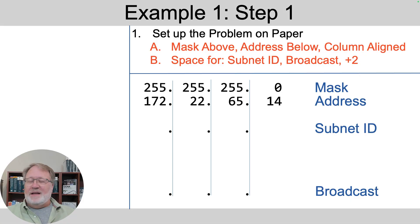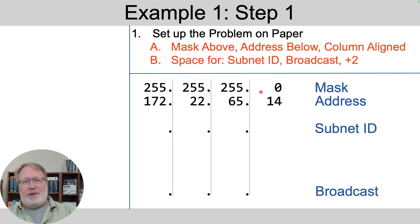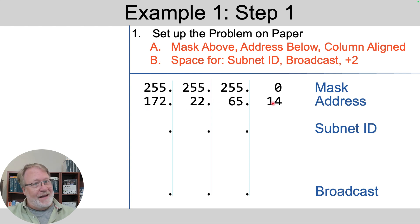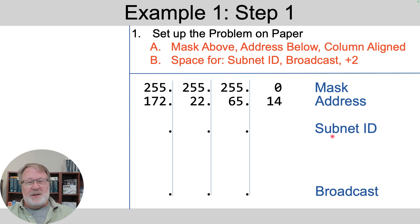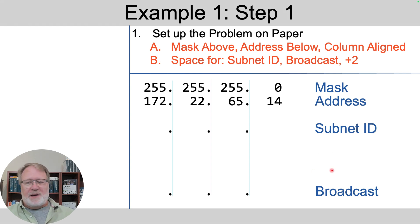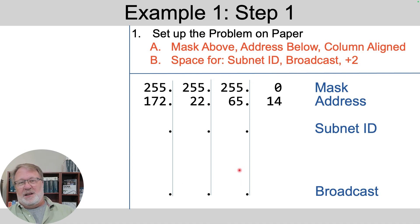Let's start with example one. We've got this IP address and this mask. Step one is all about setting up the problem — organizing it in a way that's easy to follow the process. We write the dotted decimal mask first and the IP address second, with column alignment because we're going to work octet by octet. We also leave space to write four dotted decimal numbers below for the subnet ID, broadcast address, and the first and last usable addresses.